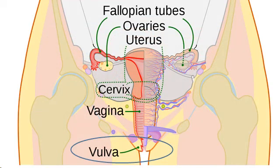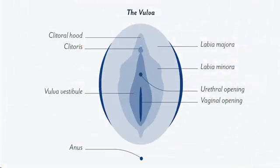The vulva is the external genitalia that includes the following parts: the mons veneris, which is the hairy skin-covered pad of fat over the pubic bone; the labia minora, which are the small lips covered with modified skin; the labia majora, the large lips covered with pubic hair; the clitoris, a small almond-shaped erectile tissue covered below the junction of the two labia minora; and the vaginal orifice, which is the opening into the vagina.